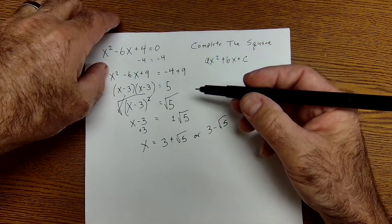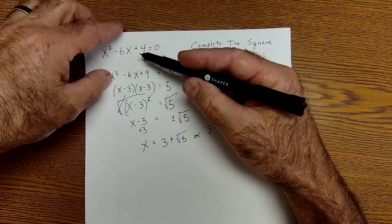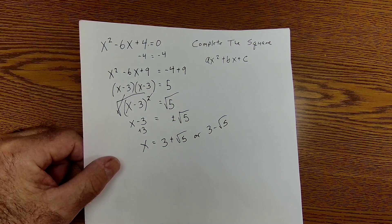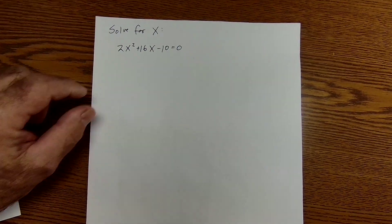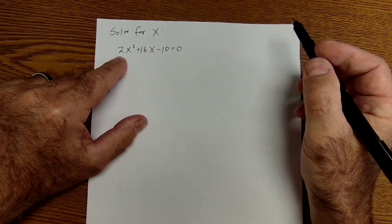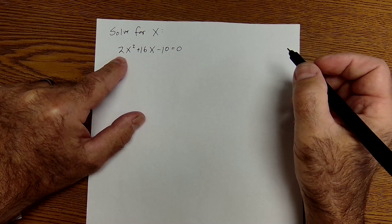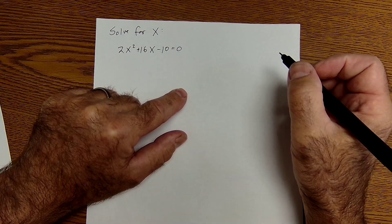So that's how you solve a quadratic equation by completing the square. Another case scenario is if I have a value in front of the X squared. I cannot complete the square here.